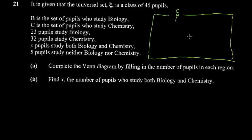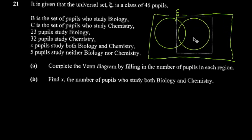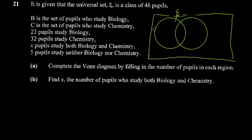You should draw your diagram neatly in a square view, but I'll draw circles. I can draw a circle here and another circle here, shifting them so there's some intersection. This one is B and this one is C — B for biology and C for chemistry.